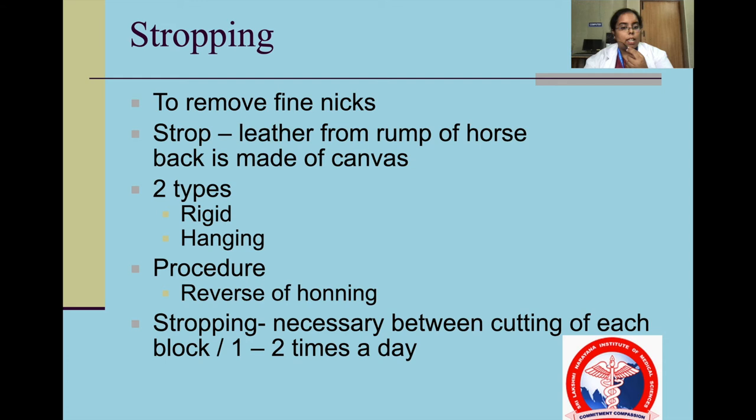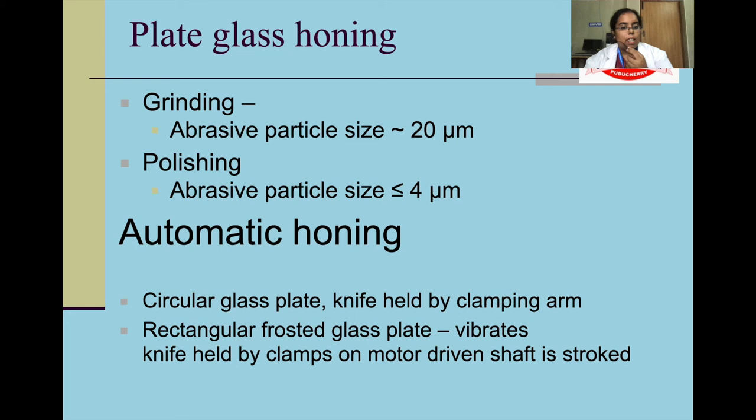Stropping is to remove fine nicks, using leather from the rump of a horse made into canvas. Two types are rigid and hanging. Stropping is necessary between each block, done 1 to 2 times a day. Another method is plate glass honing using abrasive particles. Automated honing is also available.